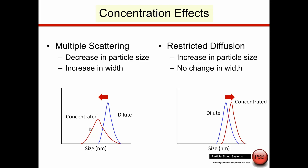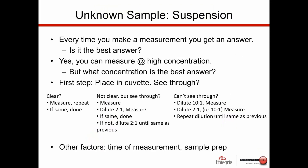Concentration effects must always be checked when working with an unknown sample, unless the sample is already at such a low concentration that it's clear and you can see right through it. In general with dynamic light scattering, the more dilute the measurement, the more accurate the result. Just because an instrument brochure says it can work up to 40 volume percent doesn't mean the result at high concentration is the best answer.